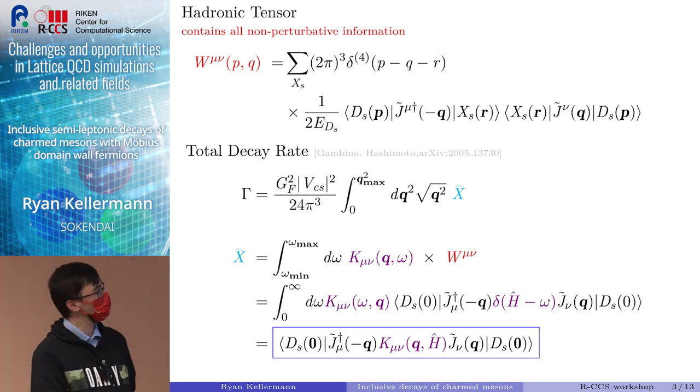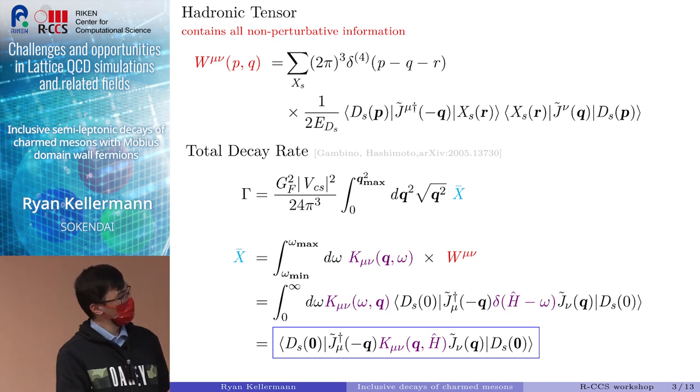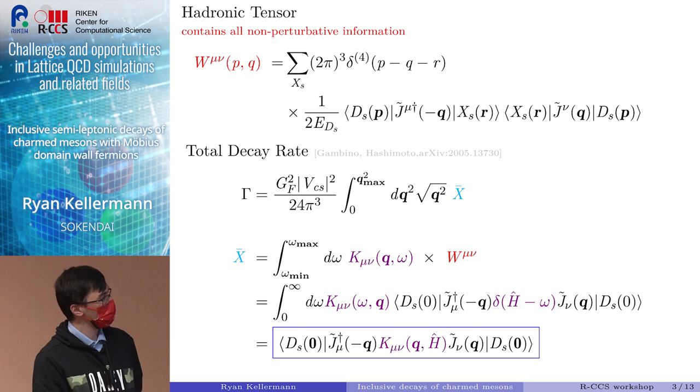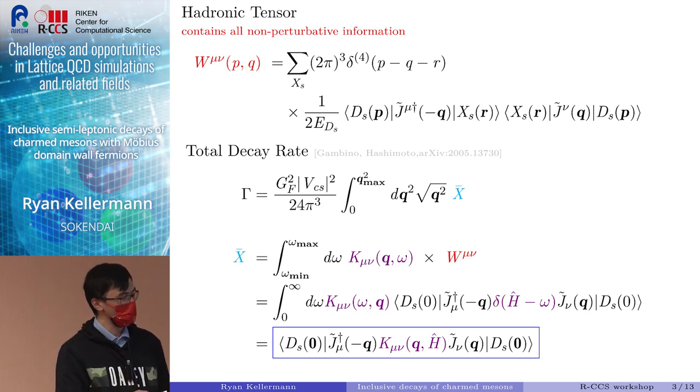Starting from this, we can see how this contributes to the total decay rate. The total decay rate for the limit of massless neutrinos can be relatively straightforwardly calculated and written down like this. Here we introduce our notation x-bar. This x-bar contains the whole energy integral, which is shown here. This can be rewritten in such a way as shown in the blue box down below.